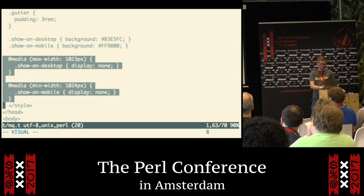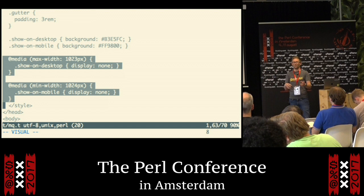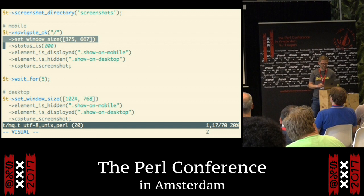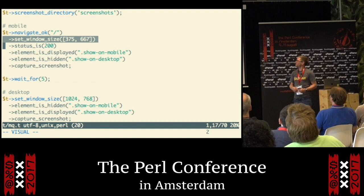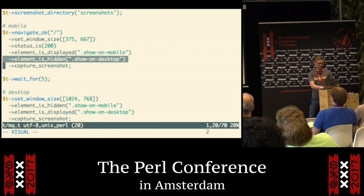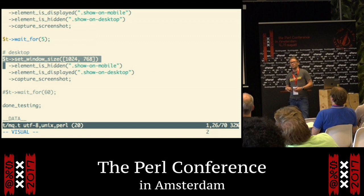The CSS specifies different breakpoints to show or hide the different elements on the web page. The way we can test this is that first we set a window size that matches some random cell phone — you can of course specify whatever you like. The test is supposed to say that the show-on-mobile element is actually displayed while the show-on-desktop element is hidden.